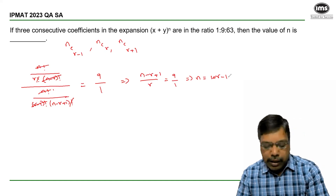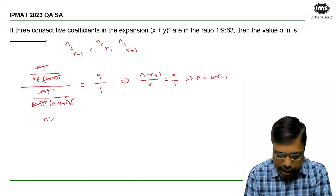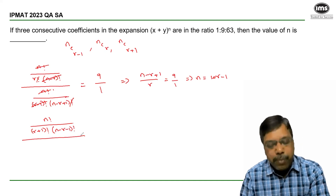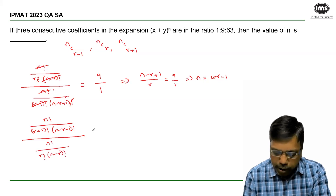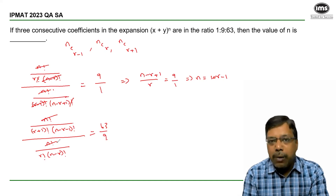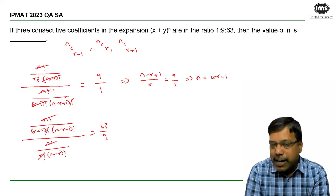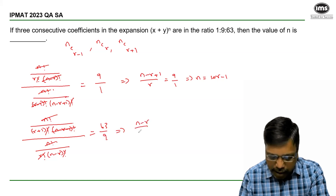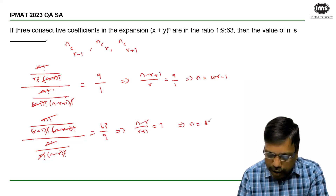Now using another set of two coefficients, nCr+1 divided by nCr: n! divided by ((r+1)! × (n-r-1)!) whole divided by n! divided by (r! × (n-r)!), which is equal to 63/9. n! gets cancelled. (r+1)! can be written as (r+1) × r!, so r! gets cancelled. Similarly (n-r)! can be written as (n-r) × (n-r-1)!. This results in (n-r)/(r+1) = 63/9, that is 7. So from here n = 8r + 7.